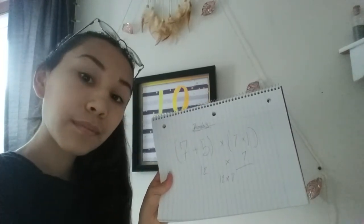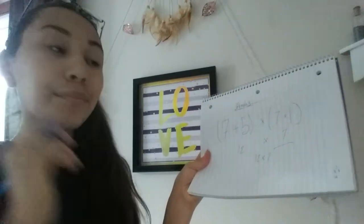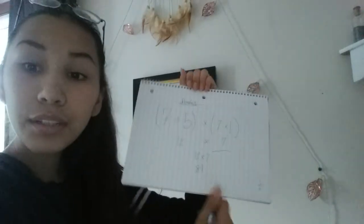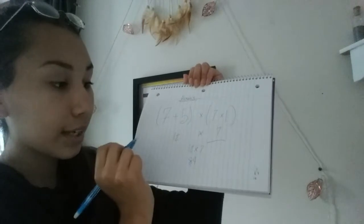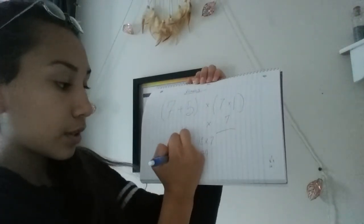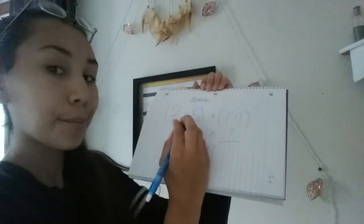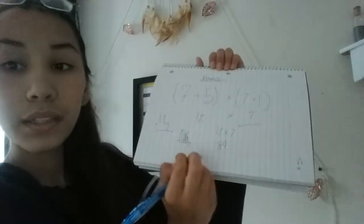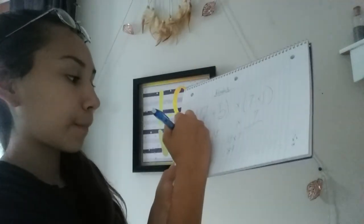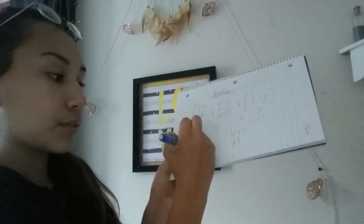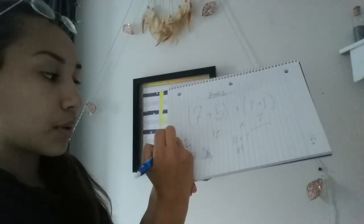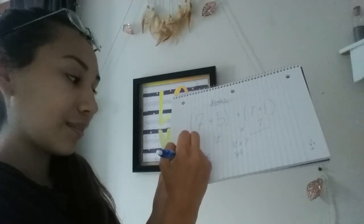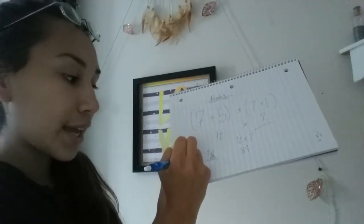Then we have twelve times seven — can anyone tell me what twelve times seven is? Eighty-four is correct! And if you didn't know how to do twelve times seven in your head, you write twelve times seven. You take your seven and your two, which gives you fourteen — put down the four, add the one — and seven times one is seven, then you add the one giving you eighty-four.